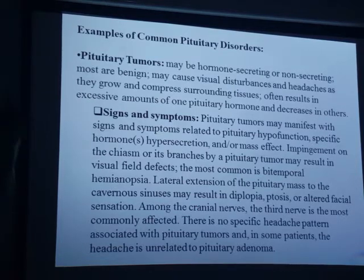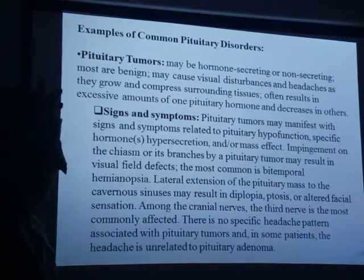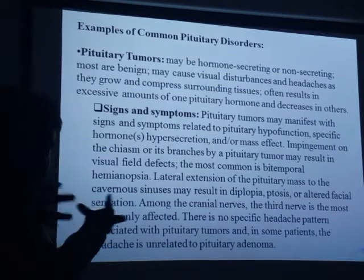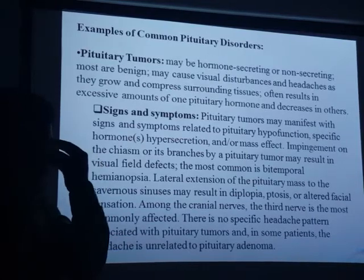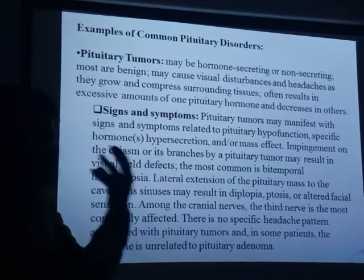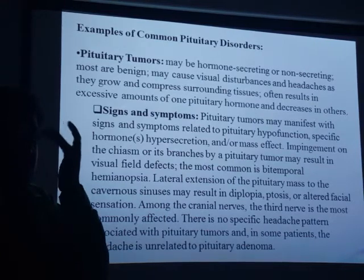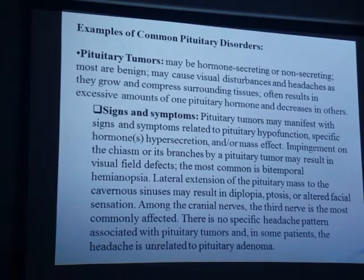If a tumor impinges on the optic chiasma or optic nerve, it will cause blindness. If it affects the cavernous sinus, it may increase pressure and cause the eyeballs to pop out — pulsating eyeballs — along with paralysis of the eye muscles. Involvement of the maxillary nerve may cause anesthesia or altered sensations over the face.